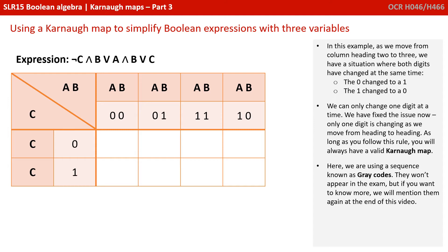As long as you follow this rule, you will always have a valid Karnaugh map. Now here we're using a sequence of binary numbers known as gray codes. They won't appear in the exam, but if you want to know more, we're going to mention them at the end of this video.